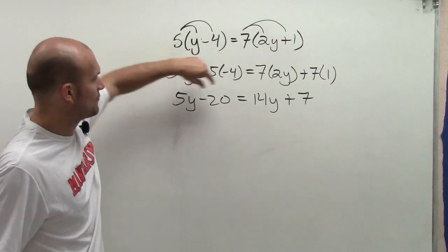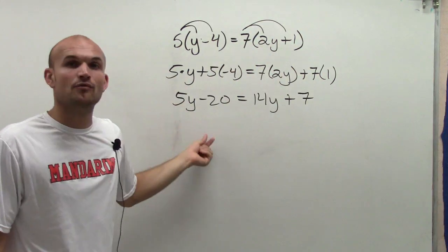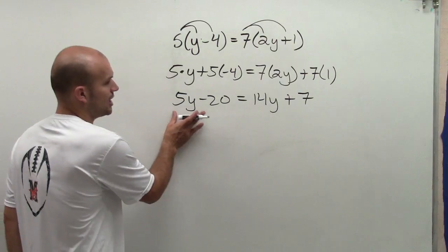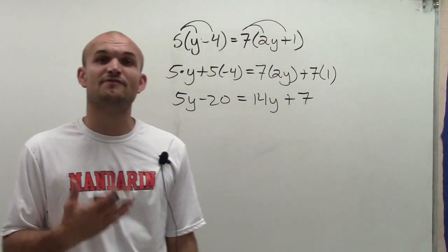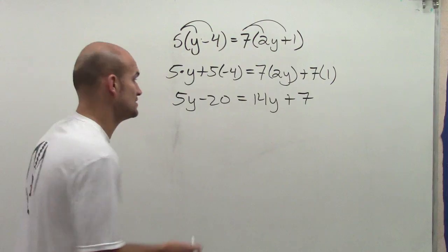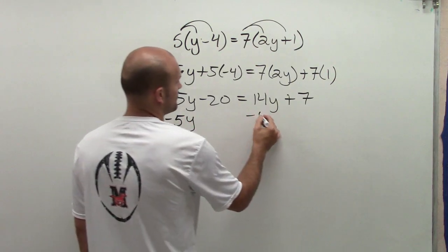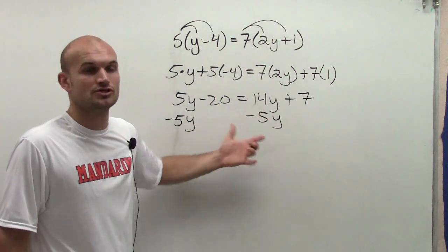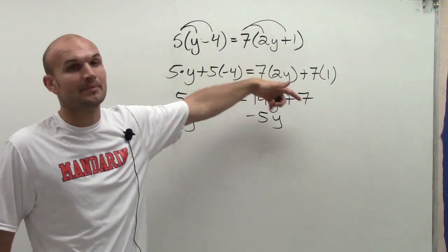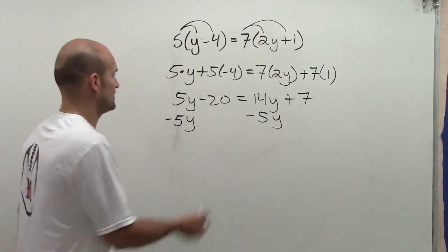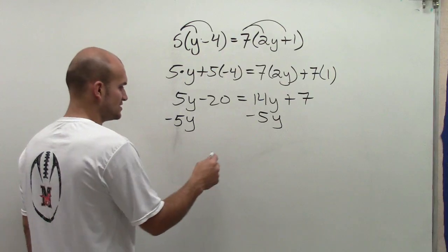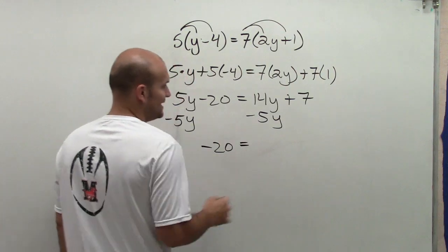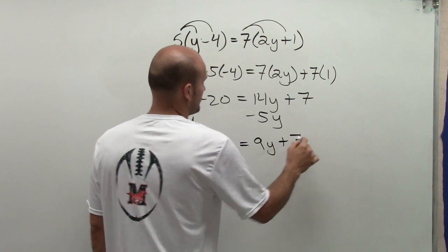Here I have 5y and 14y. Whatever my value of y is, multiplying by 5 is going to be less than multiplying by 14. So I'm going to get rid of the 5y that's on the left side of my equation. To do that, I subtract 5y on the left and right side. Remember, I can only subtract 5y from other terms that have the factor y — these two numbers don't have y, so you cannot subtract from them. So 5y minus 5y is 0, leaving me with negative 20 equals 9y plus 7.